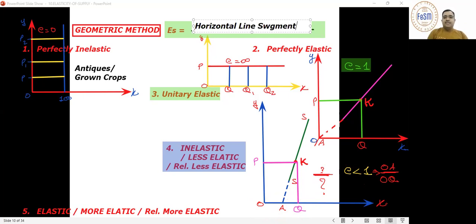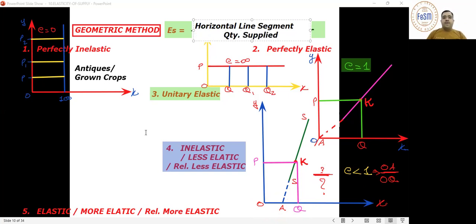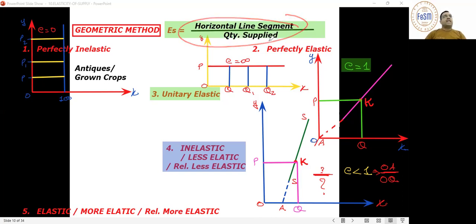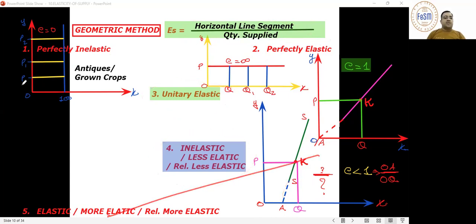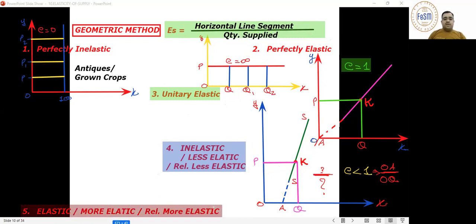To summarize the geometric method: parallel to Y-axis means perfectly inelastic. If you extend the tail backward and it touches the origin, it is unitary elastic. If it touches the X-intercept, it is inelastic. And if it passes beyond and cuts the Y-axis, it is elastic.